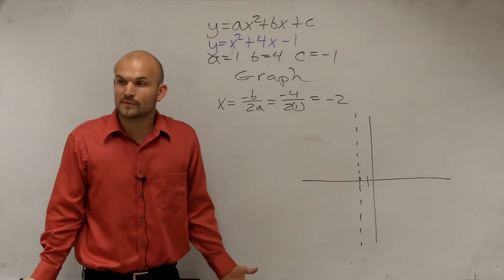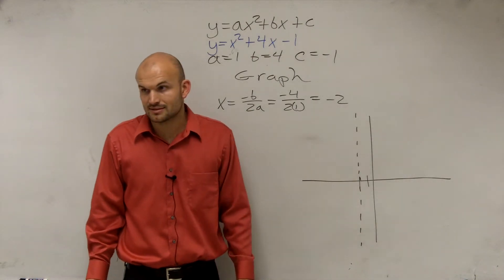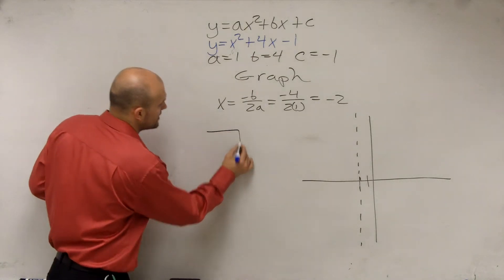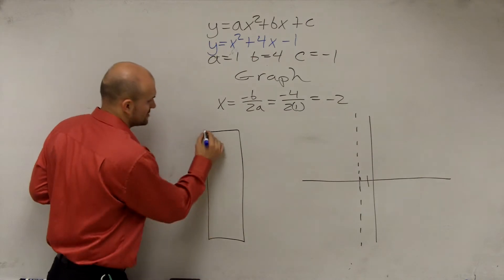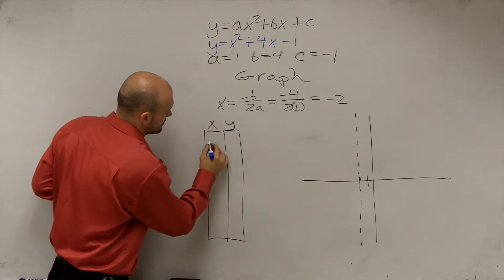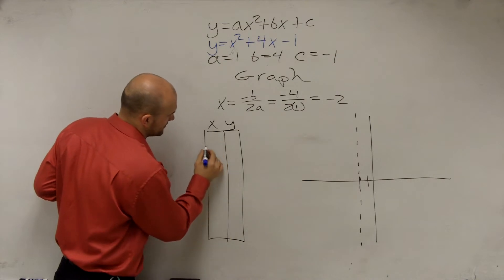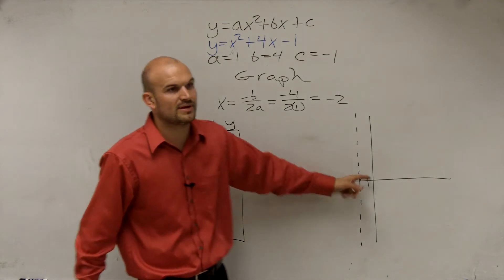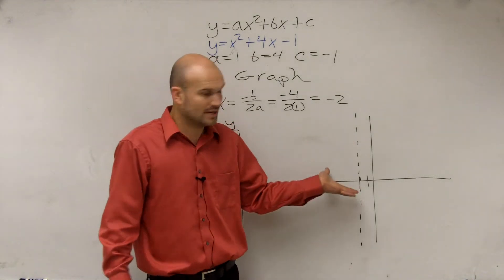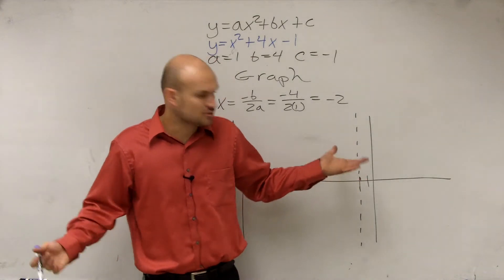All right, so now what we're going to do is once you guys have determined this, then we're just going to create a plot. So we already did the vertex. So some of your work is already done. So you have your x, y points. And what I told you guys to do is what? Pick two points to the right or left. So what would you rather do, right or left? Right. Let's do right. That sounds great.